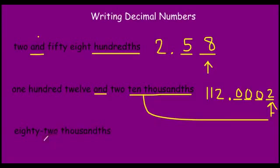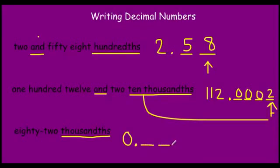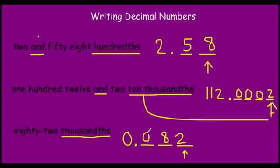For this last one, we have eighty-two thousandths. Notice there's no "and," which means it's all going to be to the right of the decimal place — smaller than a one with a "th." So we've got eighty-two thousandths. The eighty-two needs to be in the thousandths place, so we count out tenths, hundredths, thousandths. Making sure that the eighty-two ends in the thousandths place, and then we fill in that extra place value with a zero, giving us 0.082.